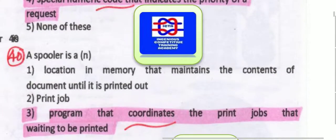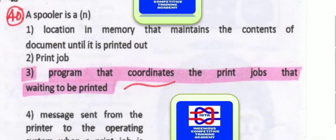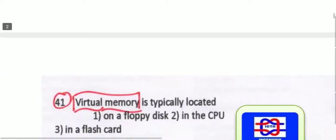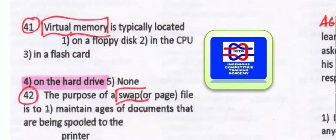A spooler is a program that coordinates the print jobs waiting to be printed — that is what a spooler is. Virtual memory is typically located on the hard drive — that is exactly where virtual memory is typically located.